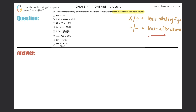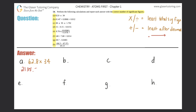I see that I have a through h, so I'm going to write a through h and give myself a little space: a, b, c, d, e, f, g, and h. Now let's get down to business. Letter a: 62.8 times 34. For all of these I'm going to get the actual answer, write it down, and then round appropriately. 62.8 times 34 into the calculator gives 2135.2.